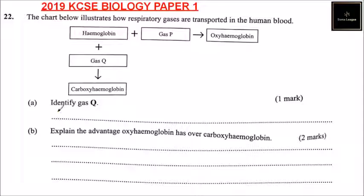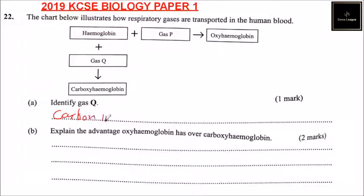Part A: identify gas Q. Gas Q — you combine hemoglobin, which is a red protein used to transport gases, with carbon monoxide, that is CO, and you will be able to get carboxyhemoglobin.